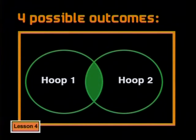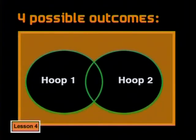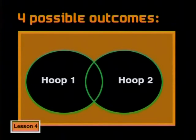That's a third possible outcome. Lastly, the bean bag could also land in the sample space but outside any of the hoops. So there are four possible outcomes in this situation. This is how we can represent possible outcomes and favorable outcomes using a Venn diagram with a sample space and event spaces. The event spaces can be separate or they can intersect.